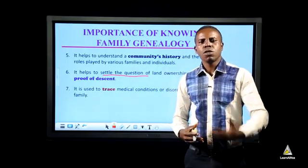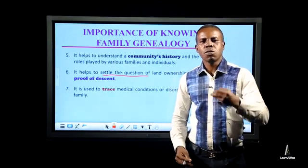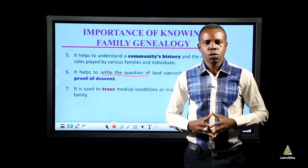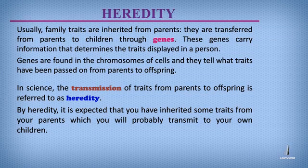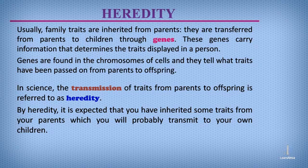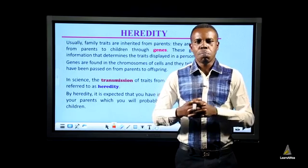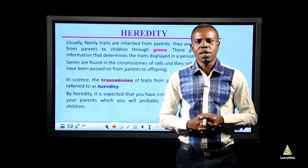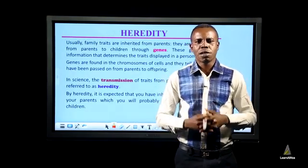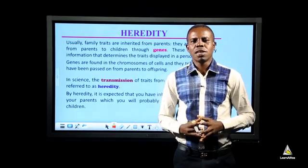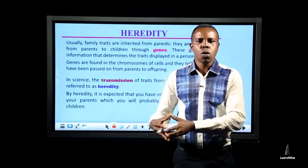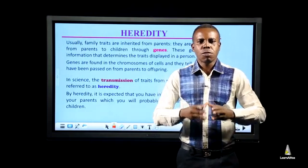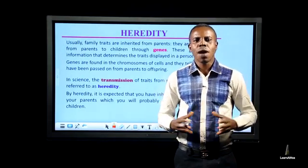Traits are being passed from parents to offspring, and it is expected that offspring pass those traits to their own offspring. This brings us to heredity. Traits are inherited through genes — genes are tiny units in a chromosome that carry hereditary information. They define the type of traits displayed in an individual. In science, the transmission of traits from parents to offspring is known as heredity. By heredity, you have inherited some traits from your parents and are expected to pass these traits to your own children, who in turn pass them to their children. This can continue over many generations.